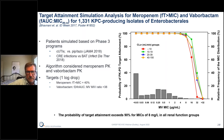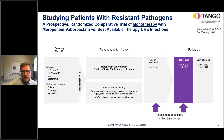Monte Carlo simulations using data from the phase 3 trial of meropenem-vaborbactam in patients with CRE infections or complicated UTIs were used to examine target attainment across strata of creatinine clearance. The targets were meropenem time above MIC of 40% and a vaborbactam AUC-to-MIC ratio of 38 for a one-log drop. Target attainments were high across all patient subsets.